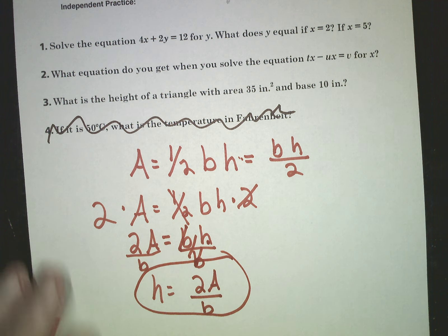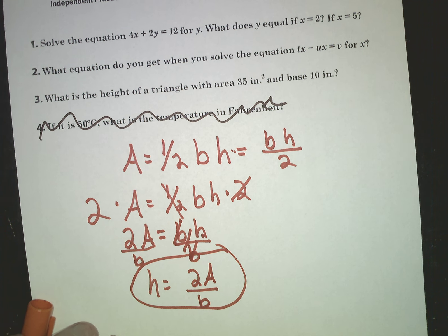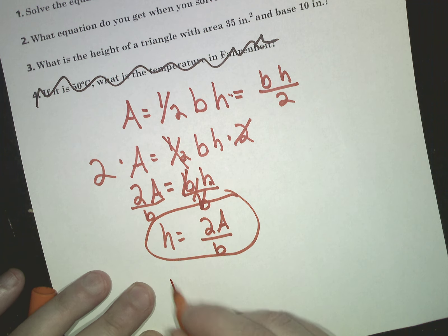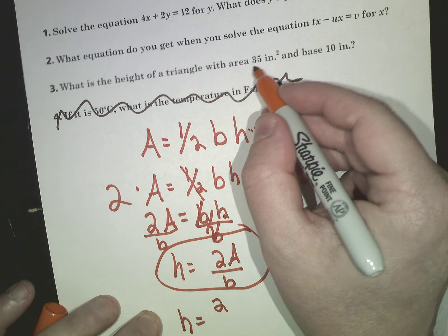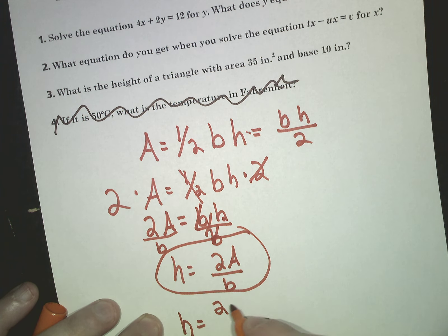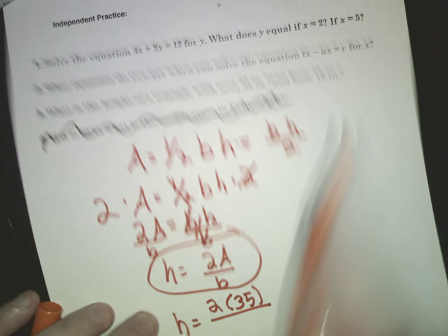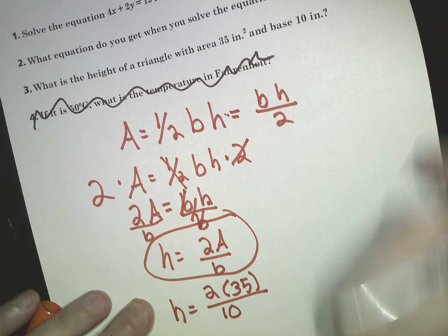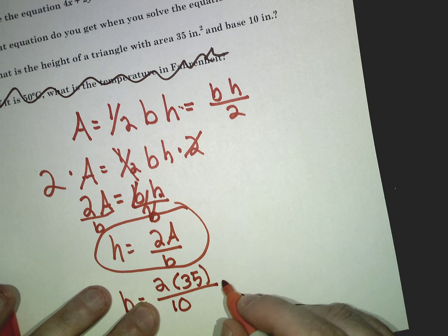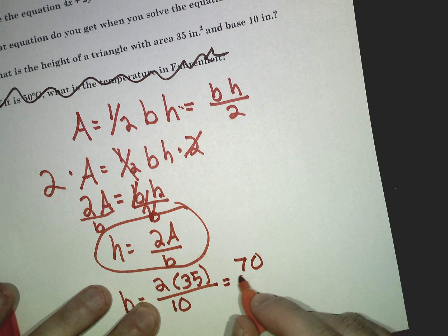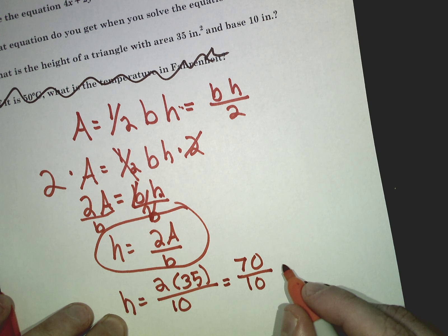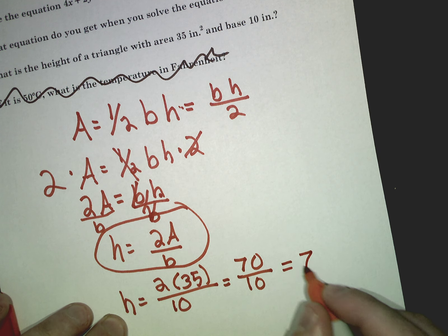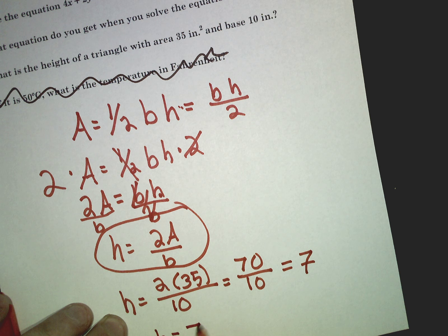Now that's halfway done, but that's the hardest part. Now I'm going to plug in the numbers. I have h equals 2 times the area, which is 35, over b, which is 10. 2 times 35 equals 70. 70 divided by 10 — put it in the calculator if you don't know it — it's just 7. So the height of this triangle is 7 inches.